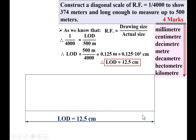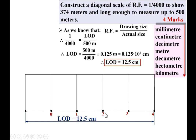Divide the total length into equal divisions — since the scale measures up to 500 meters, divide it into 5 equal divisions, each representing 100 meters. Number them starting from the second division: 0, 1, 2, 3, 4. Draw vertical lines through all these points. Each division represents 100 meters, which is 1 hectometer, so label this axis as hectometer.